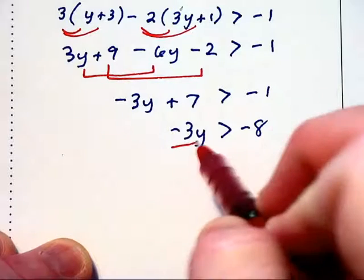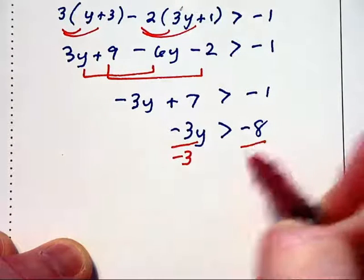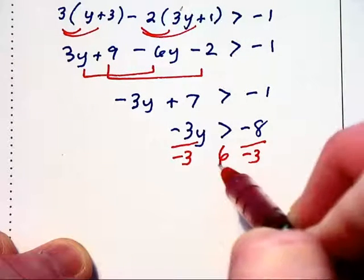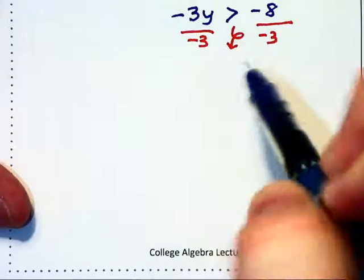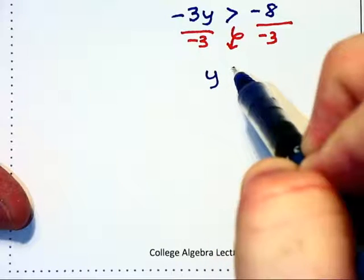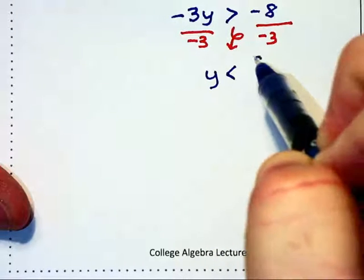Again, we are going to divide by a negative number on each side of the equation, which is going to have us change the direction of the inequality. We now have y is less than 8 thirds.